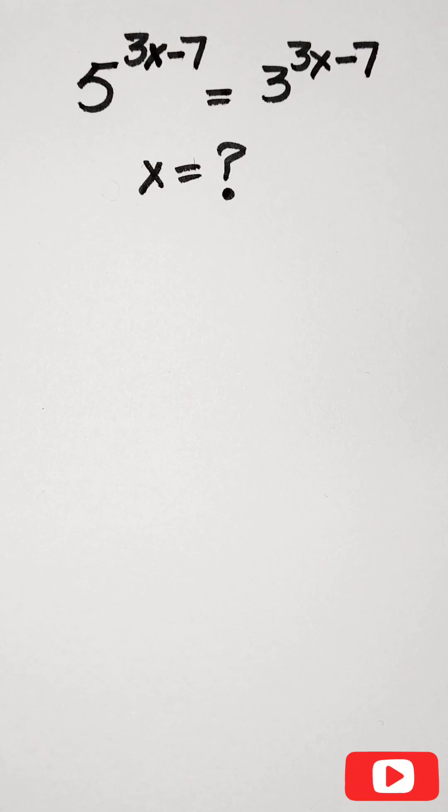Our problem is 5 to the power 3x minus 7 equals 3 to the power 3x minus 7. We have to find the value of x. First, we're going to divide by 3 raised to the power 3x minus 7 on both sides.